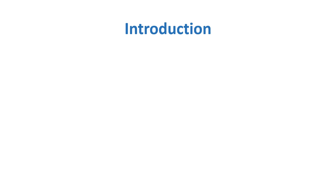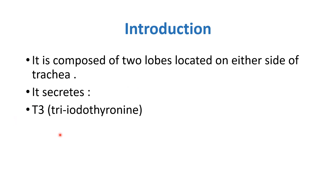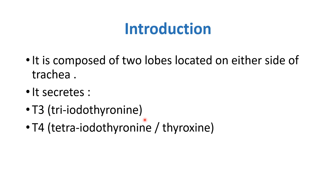The thyroid gland is present on either side of the trachea. It secretes three hormones: T3 (triiodothyronine), T4 (tetraiodothyronine, also called thyroxine), and calcitonin. Calcitonin is related to calcium regulation.